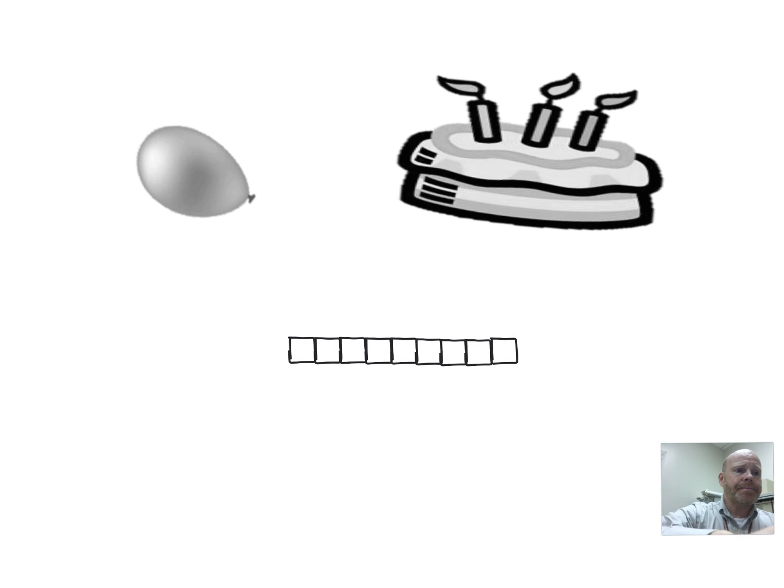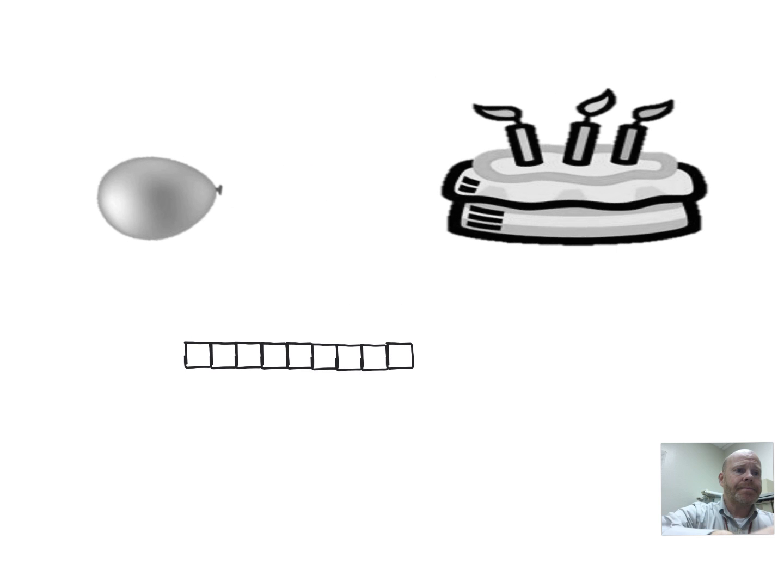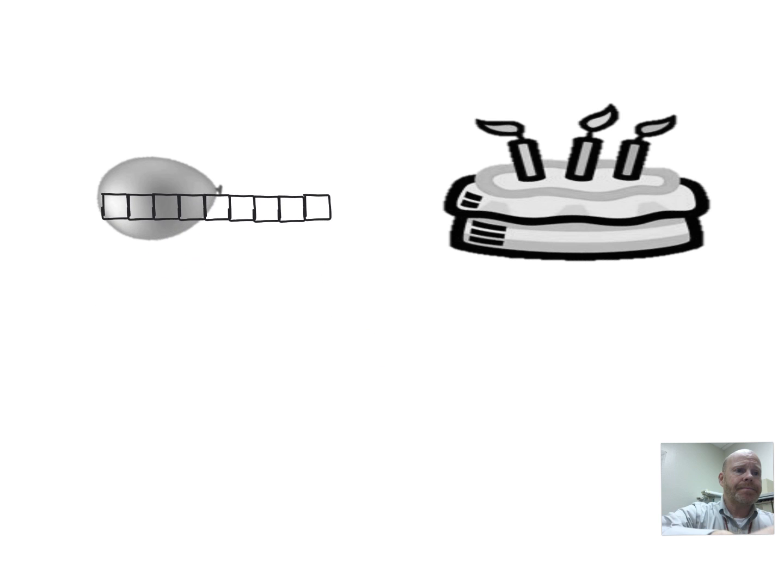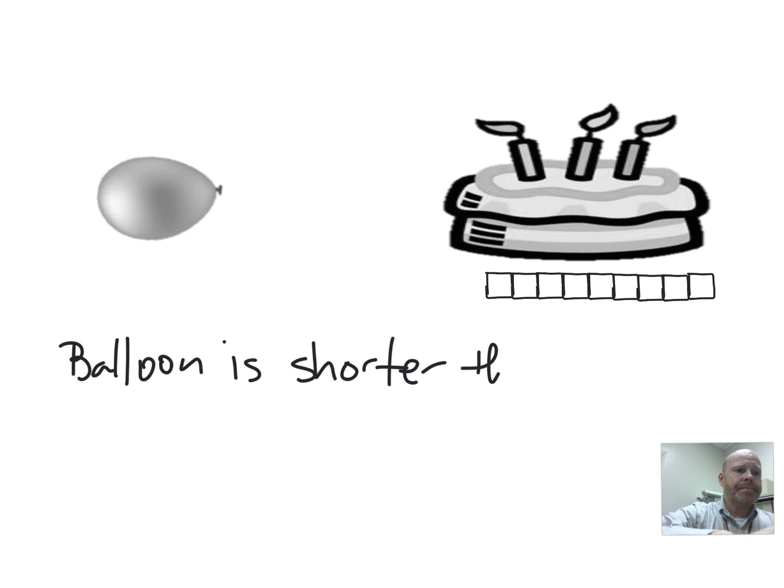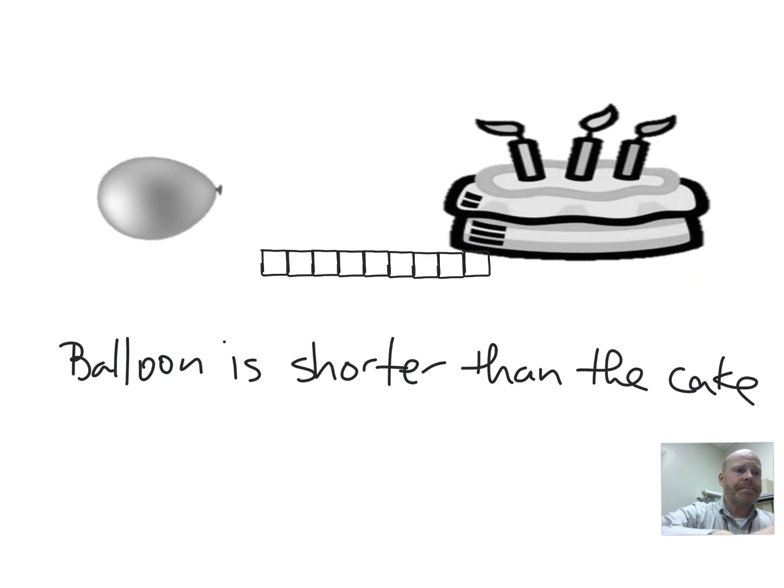So what I've done is I've kind of generated something to symbolize nine centimeters of paper and the idea is we're going to take that nine centimeter strip and compare it with a balloon. I'm going to rotate the balloon a little bit and we can see that my balloon is shorter than my strip of paper and we can see that the cake is longer than my strip of paper. That automatically allows us to compare these two things. We know that the balloon is shorter than the cake.